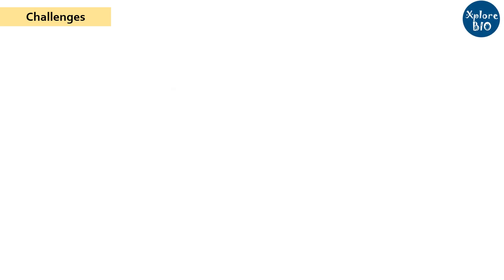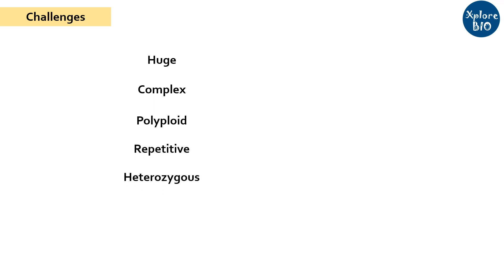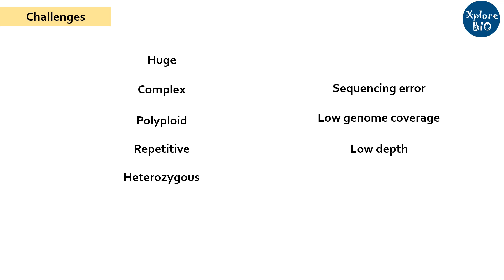Coming on to the major challenges faced during de novo assembly: huge, complex, polyploid genomes with lots of repetitive DNA and heterozygosities is the major challenge in accurate sequence assembly. Errors in sequencing, low genome coverage, and low depth of sequencing are some of the other problems that need to be considered when going for de novo sequencing.